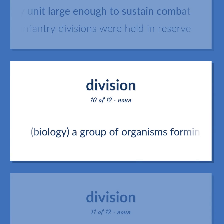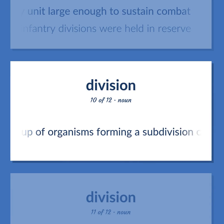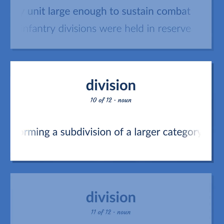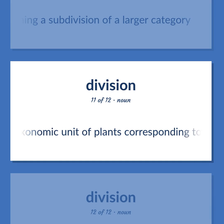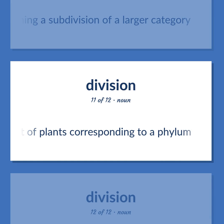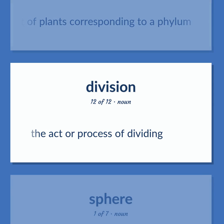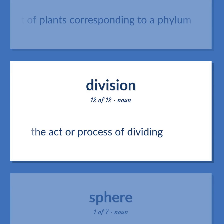Division — Biology: a group of organisms forming a subdivision of a larger category. Botany: a taxonomic unit of plants corresponding to a phylum. Also, the act or process of dividing.